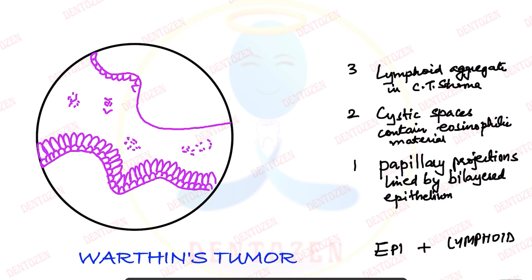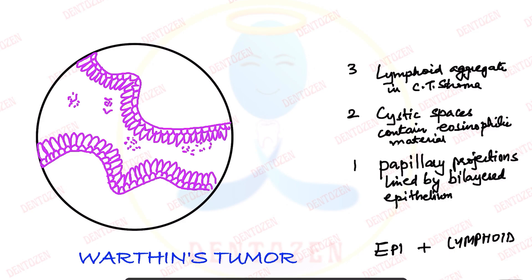We draw the same thing on the other side as well — one layer of cuboidal cells and above that another layer of tall columnar cells. The layer projecting towards the lumen is made up of tall cells and is called the inner layer. The one away from the cystic space is called the outer layer.